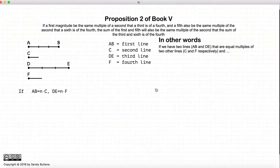And what that means in plain English, let's start out with two lines, AB and DE, which are equal multiples of C and F. In other words, AB is equal to N times C and DE is equal to N times F. And in our example, N is equal to 3.